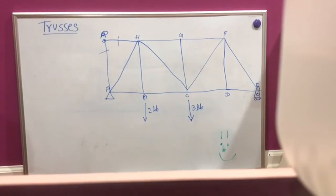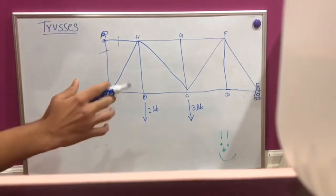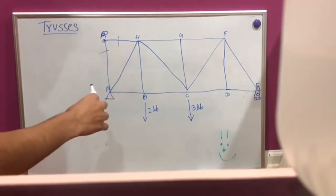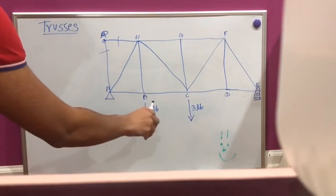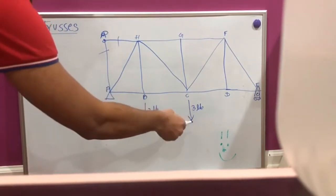The second reason why some segments are zero force members: if three members meet in an unloaded joint, of which two are collinear, then the third member is a zero force member. So let's see. The first requirement is they have to be unloaded. So point B is loaded, so it's out of the question. Point C is loaded again.